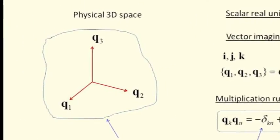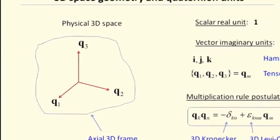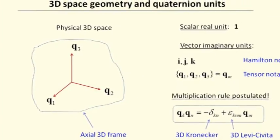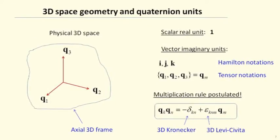It is based on four units. One unit is a real scalar. The other three units are different imaginary vectors. Geometrically, these three unit vectors initiate a Cartesian coordinate system exactly as three mutually orthogonal gyroscope axes.